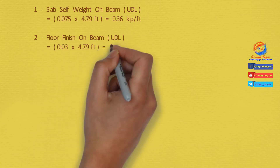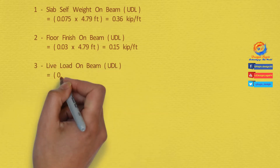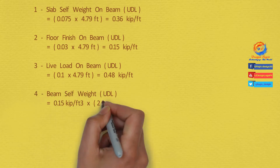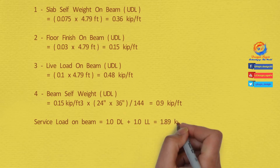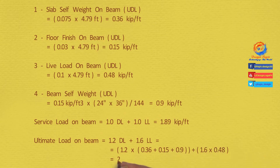Floor finish load acting on beam equals 0.036 kip per square foot × catchment length 4.79 feet = 0.15 kip per foot. Live load acting on beam equals 0.1 kip per square foot × 4.79 feet = 0.48 kip per foot. Beam self-weight is concrete density 0.15 kip/ft³ × cross-sectional area 24×36/144 = 0.9 kip per foot. Service load is 1.0 dead load + 1.0 live load; adding all loads equals 1.89 kip per foot. Ultimate load is 1.2 dead load + 1.6 live load = 2.46 kip per foot.